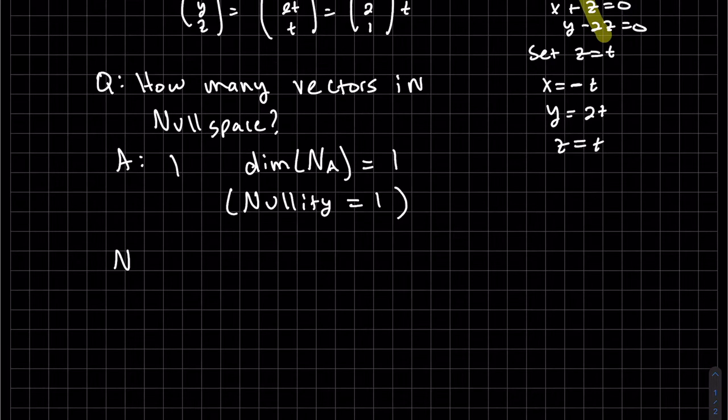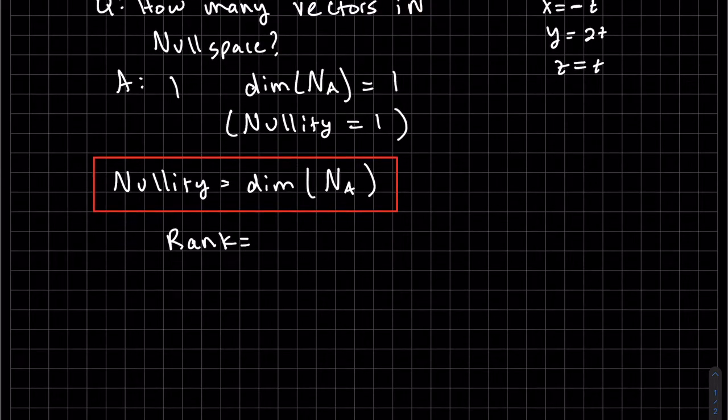So in general, the nullity is the dimension of the null space of that matrix. The rank is the dimension of the row space and the dimension of the column space.